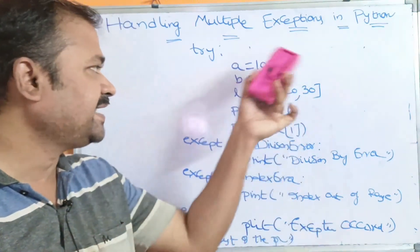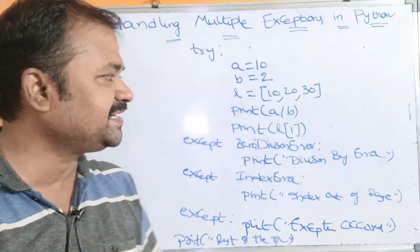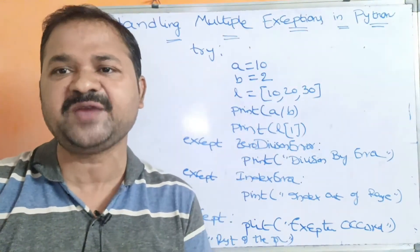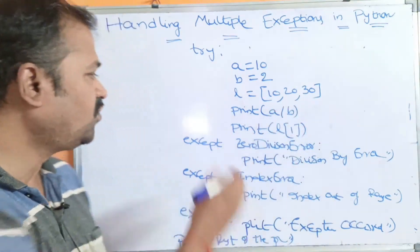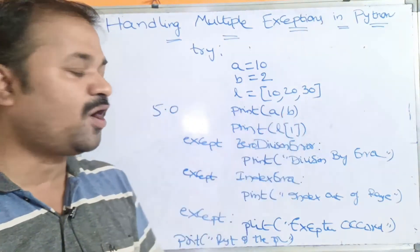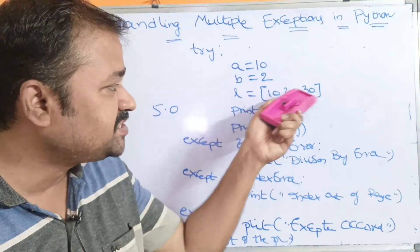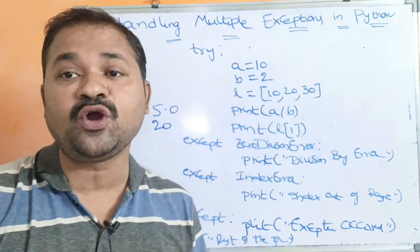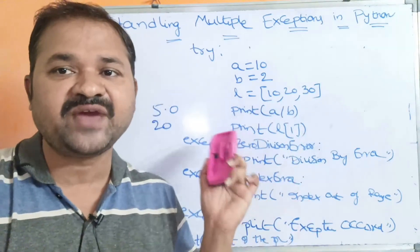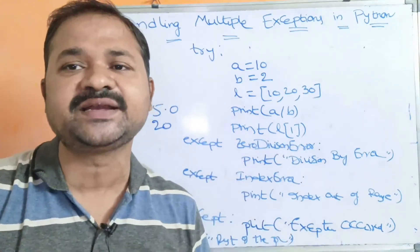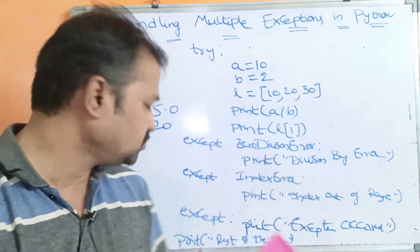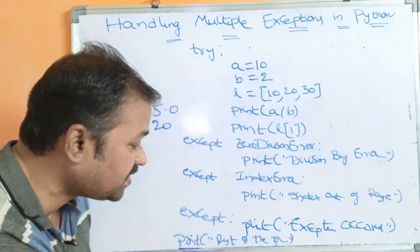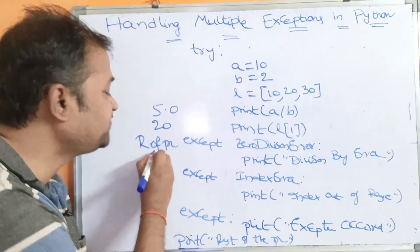Let's trace the program execution. With a=10, b=2, and L=[10,20,30], print(a/b) gives 5.0 since Python division produces a float. print(L[1]) gives 20. There is no exception in the try block, so the control comes out from all the except blocks — no except block gets executed — and we print 'rest of the program'.